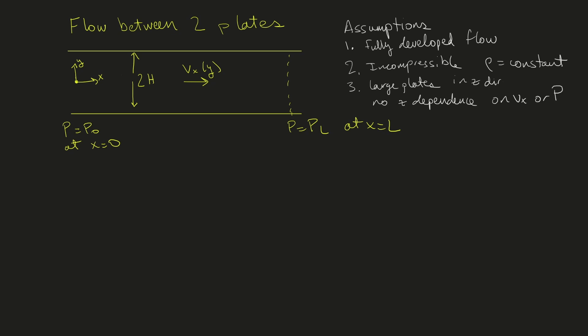We start with the continuity equation: dvx/dx + dvy/dy + dvz/dz = 0. Since this is fully developed flow, the dvx/dx term is zero — no dependence on velocity in the flow direction. Since we have large plates, the dvz/dz term is also zero, and the velocity in the z direction is zero.